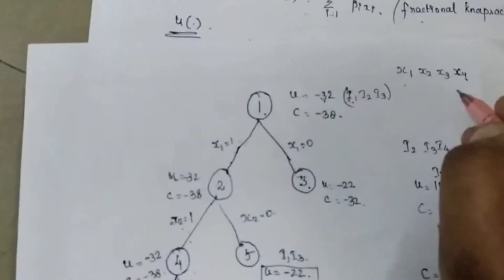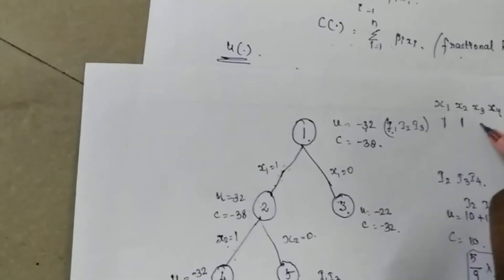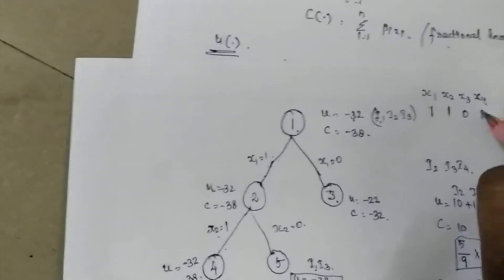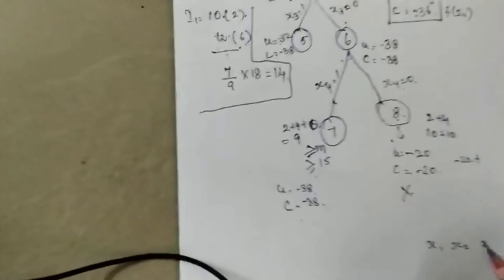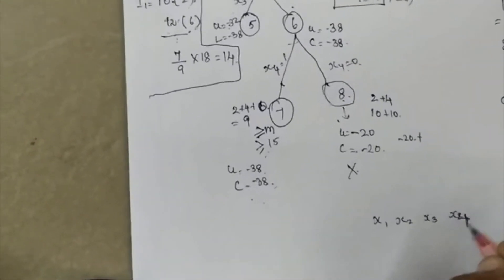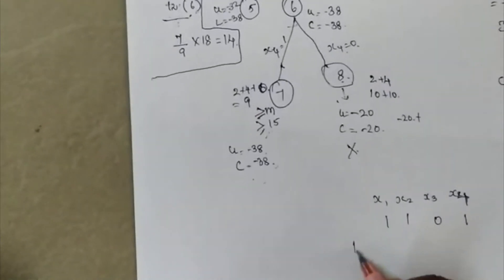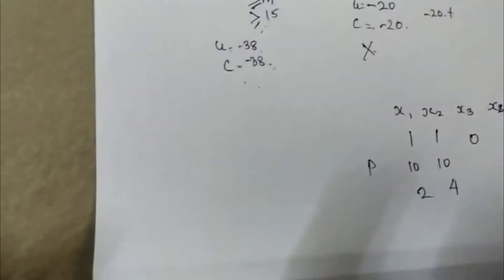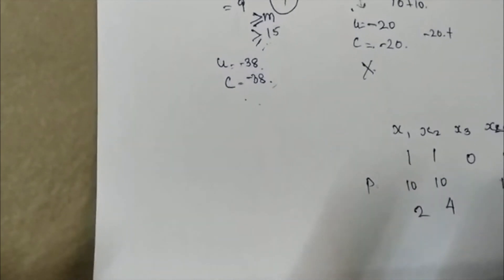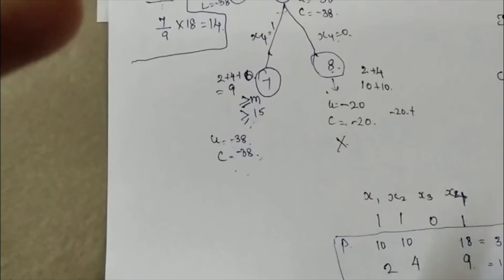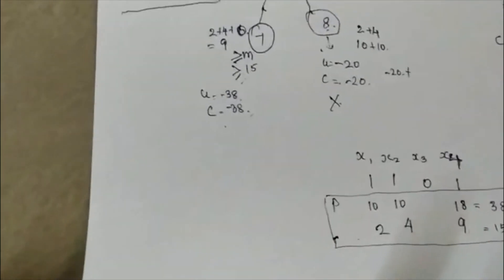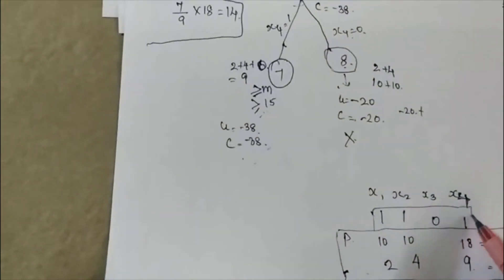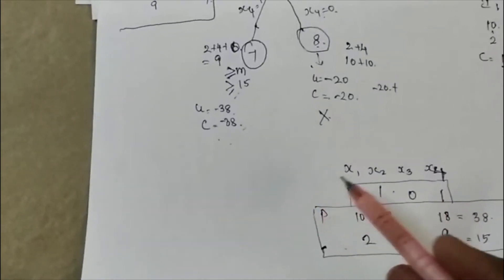Traversing from root to the optimal leaf: x1=1, x2=1, x3=0, x4=1. The final output as a fixed-size tuple is (1, 1, 0, 1). The selected items are i1, i2, and i4 with profits 10, 10, and 18 respectively. Total weight = 2+4+9 = 15 and total profit = 38. This is the optimal solution to the 0/1 knapsack problem using least-cost branch and bound.